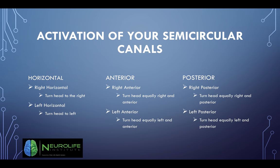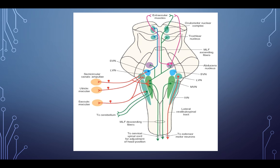To activate the semicircular canals: for right horizontal, turn the head to the right; for left horizontal, turn to the left. For the right anterior canal, turn the head equally right and anterior; for the left anterior, equally left and anterior. For the right posterior canal, turn equally right and posterior; for the left posterior, turn equally left and posterior.